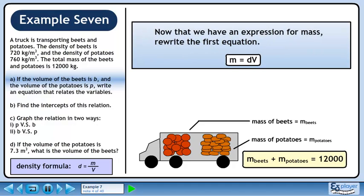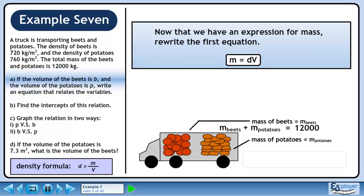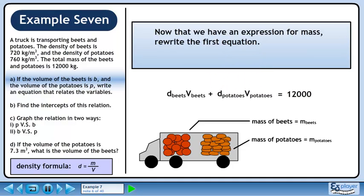Now that we have an expression for mass, rewrite the first equation. Recall that our first equation was mass of beets plus mass of potatoes equals 12,000. Since m equals dv, replace each mass with a product of density and volume.